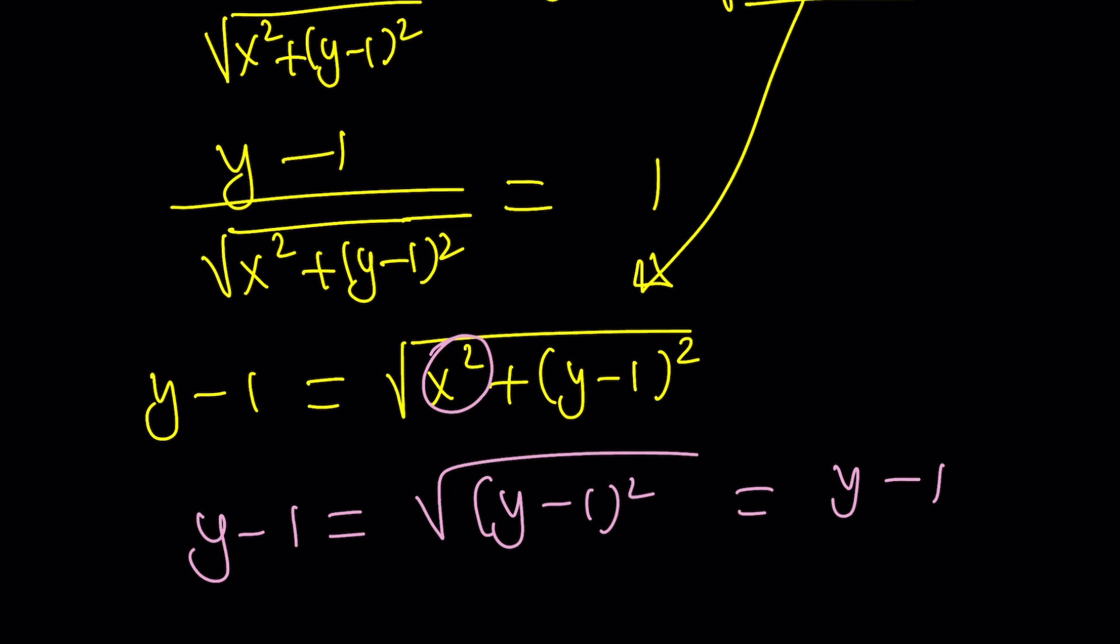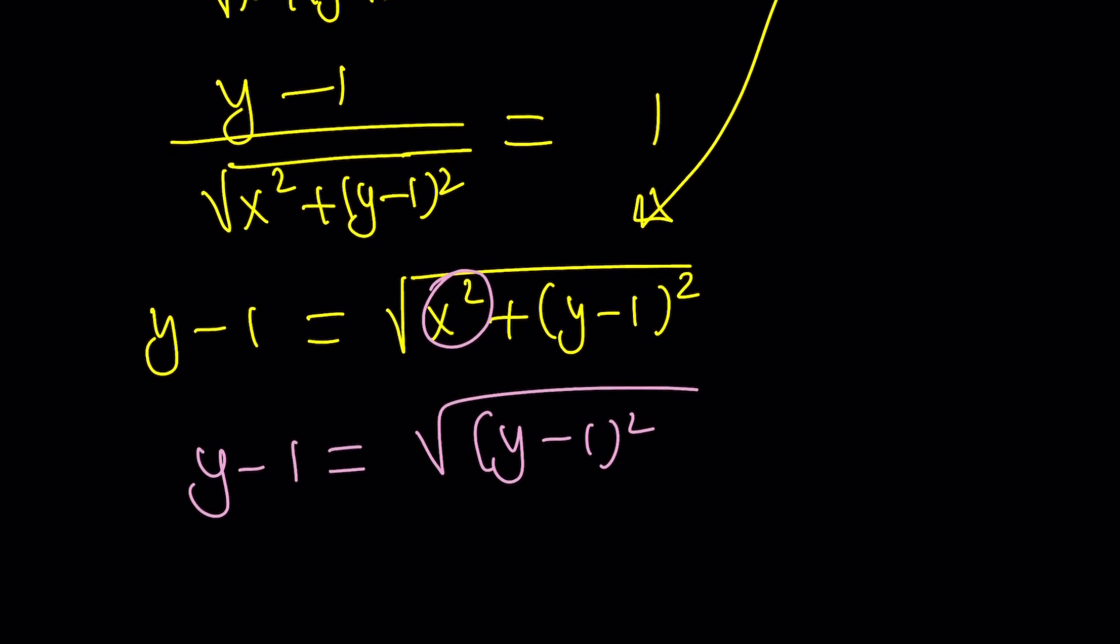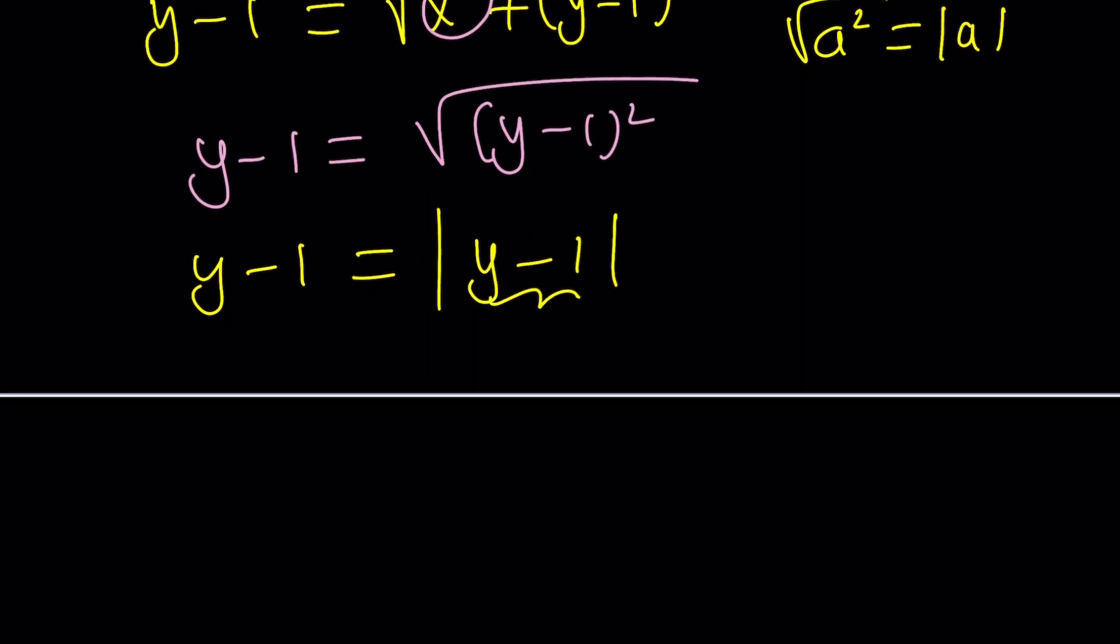You got to remember, y minus 1 is real. We're not talking about the square root or the absolute value of a complex number. So I can't do the cancellations. That's incorrect. So what I need to do then is use absolute value, and that would give me y minus 1 equals the absolute value of y minus 1. Square root of a squared is absolute value of a, if a is real. The absolute value of something equals itself. That means that thing is positive. So y minus 1 needs to be greater than 0, which means y is greater than 1. So that's one condition we got. Another condition was x equals 0.